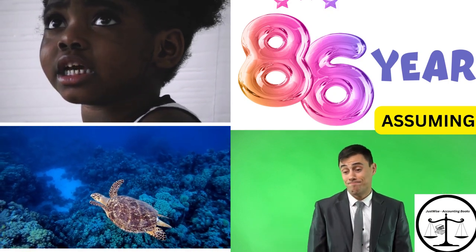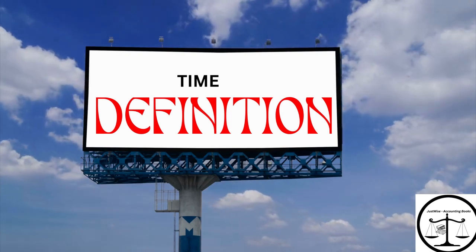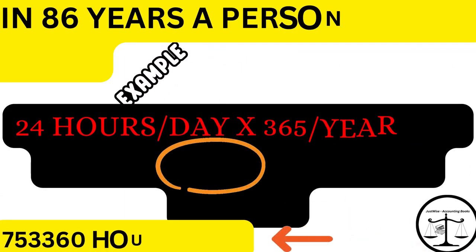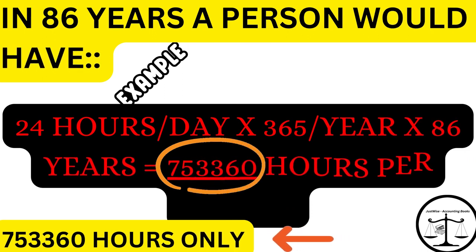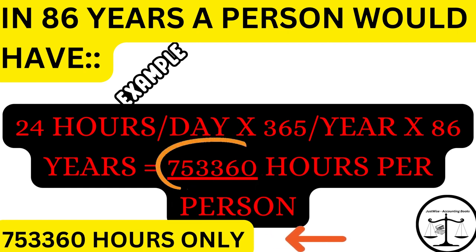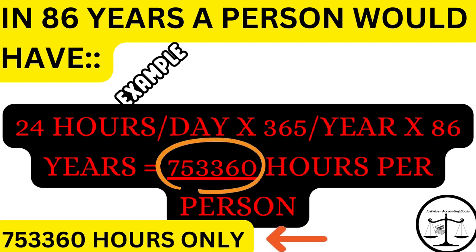For example, if a person lives for 86 years, a person would have 24 hours per day multiplied by 365 days per year multiplied by 86 years, which equals 753,360 hours in 86 years.